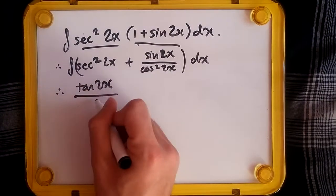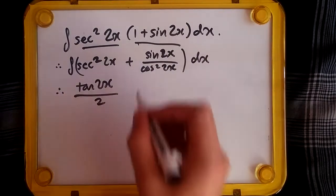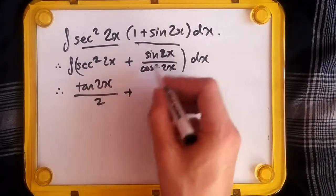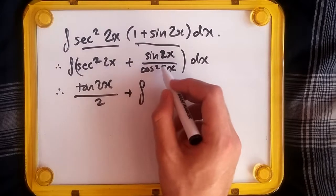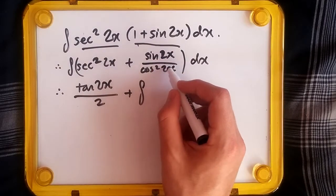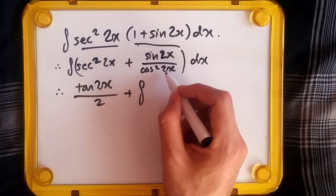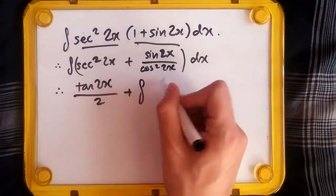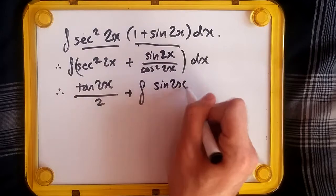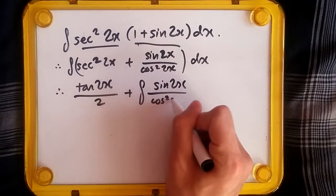Plus, now let's integrate this part. The integral of this term—rewriting this should give us tan²(2x), but actually no, let's keep it in this form. Let me show you another technique.